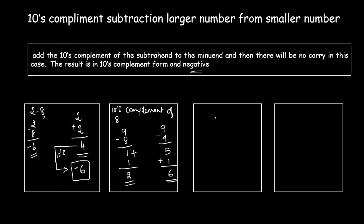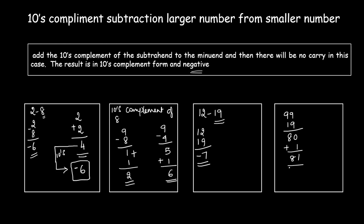Let's try a two-digit example: 12 minus 19, subtracting a larger number from a smaller number. In regular subtraction, the answer should be minus 7. First, find the tens complement of 19. The nines complement of 19 is: 9 minus 9 equals 0, and 9 minus 1 equals 8, giving 80.